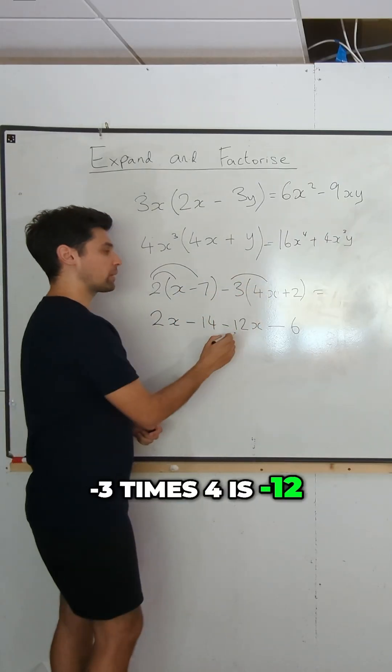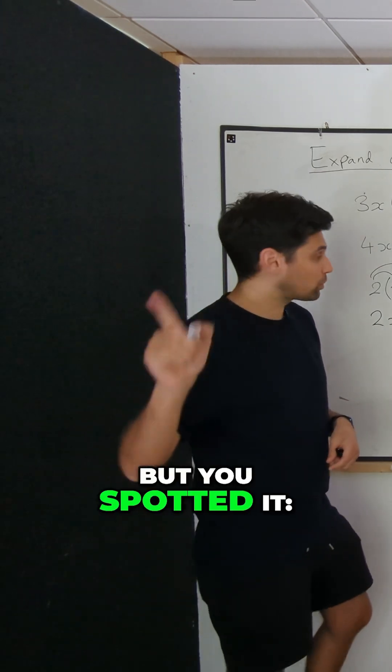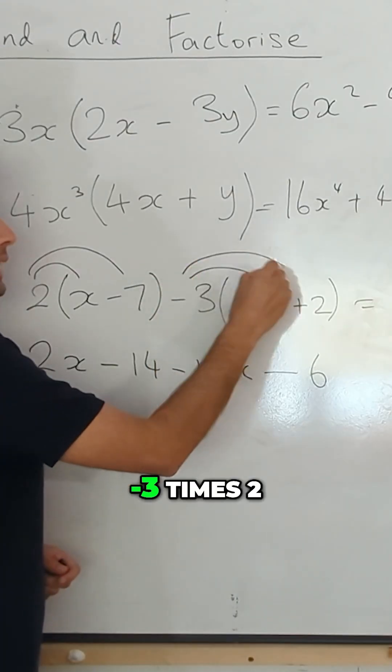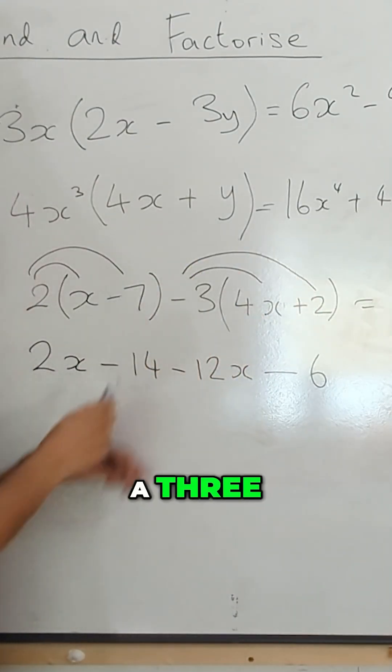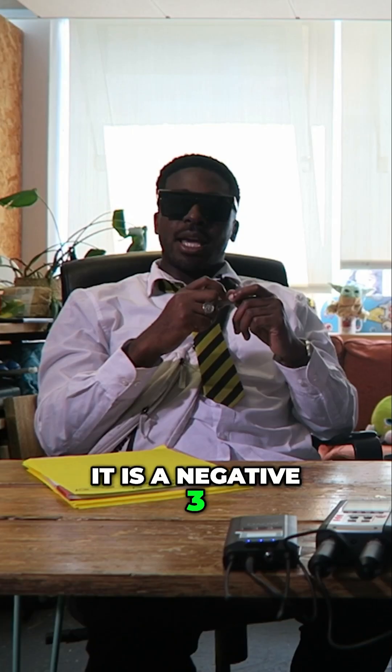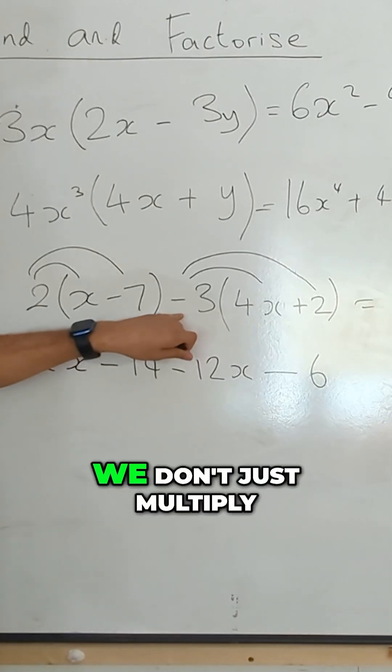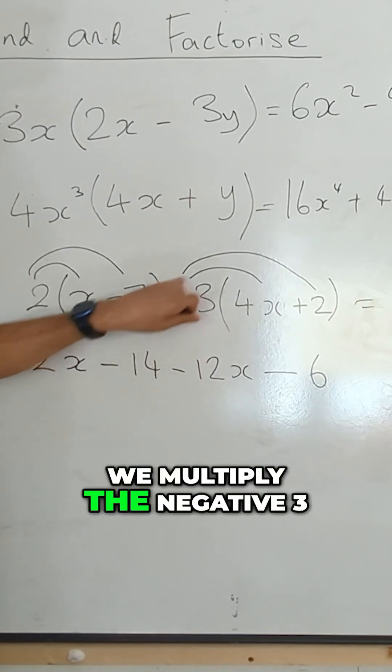Minus three times four is minus 12. And the thing I thought was going to catch you out, but you spotted it. Minus three times two. This is not just a three. It is a negative three. So when we are multiplying it into the bracket, we don't just multiply the three, we multiply the negative three.